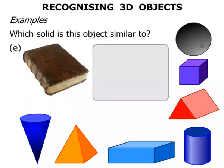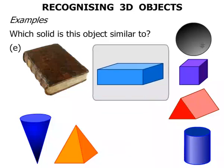And finally, we've got this old book. What sort of object does this look like? It looks like the rectangular prism. Excellent.